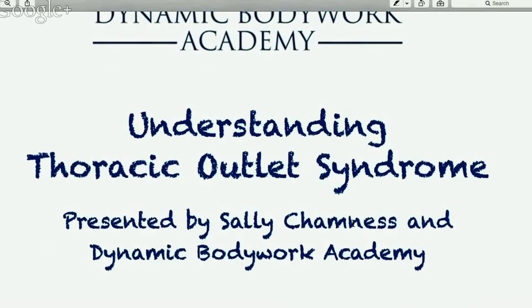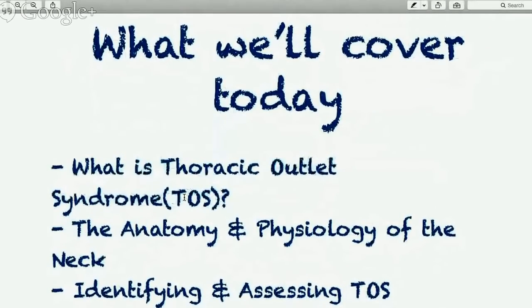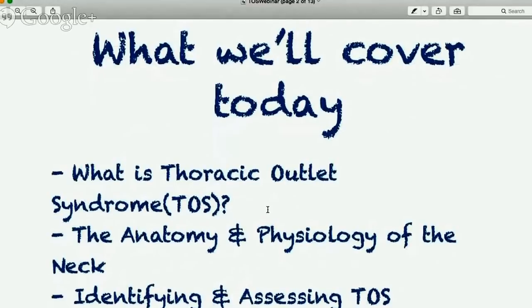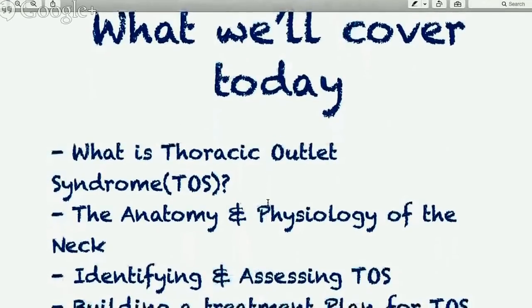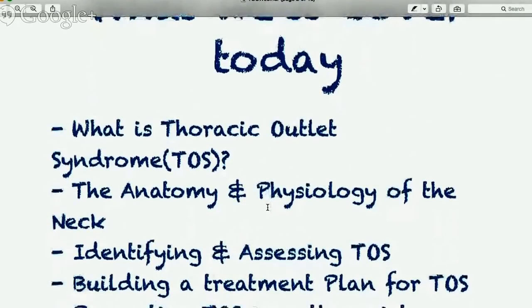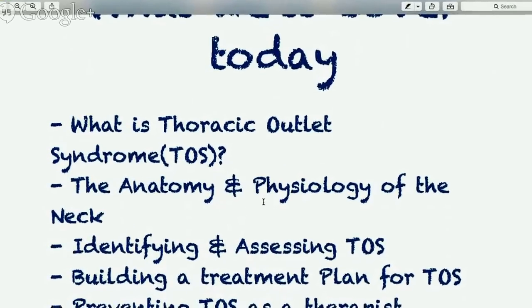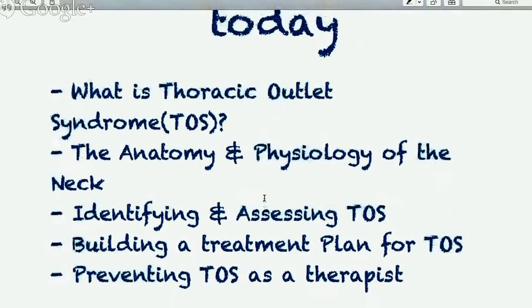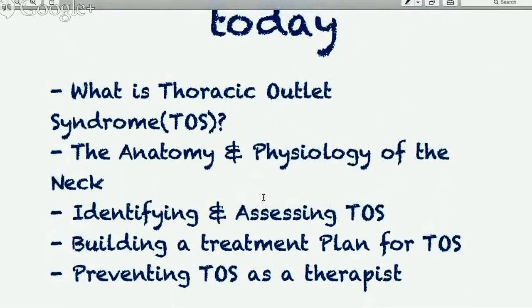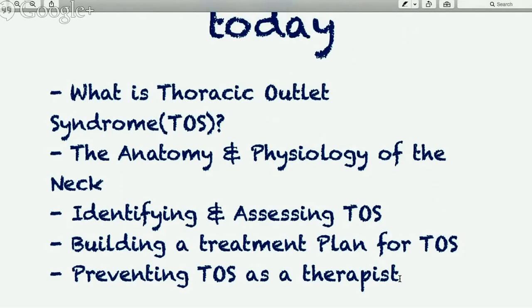We're going to cover: what exactly is thoracic outlet syndrome, which I will refer to as TOS; the anatomy and physiology of the neck; how to identify and assess thoracic outlet syndrome; how to build a treatment plan including the types of techniques and specific muscles; and finally, preventing thoracic outlet syndrome — information you can share with your client as well as things you can consider as a therapist for your own body mechanics.